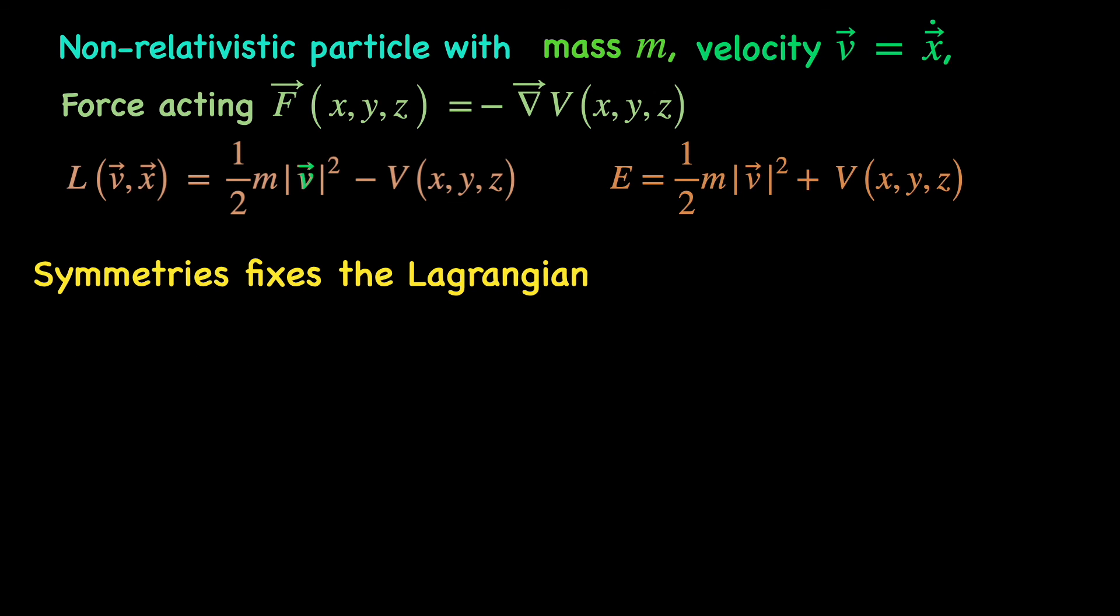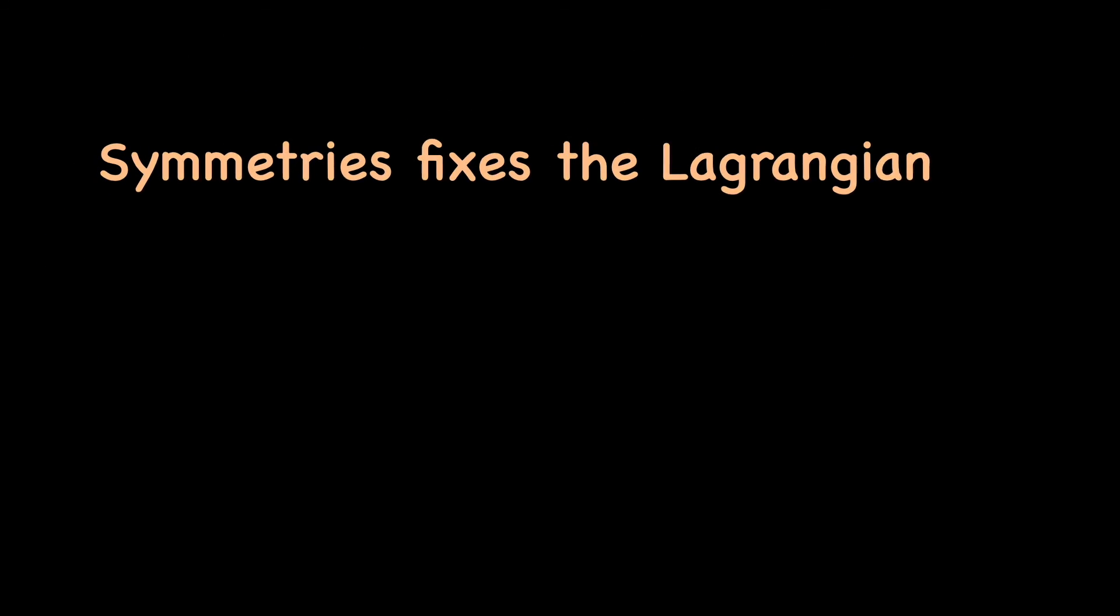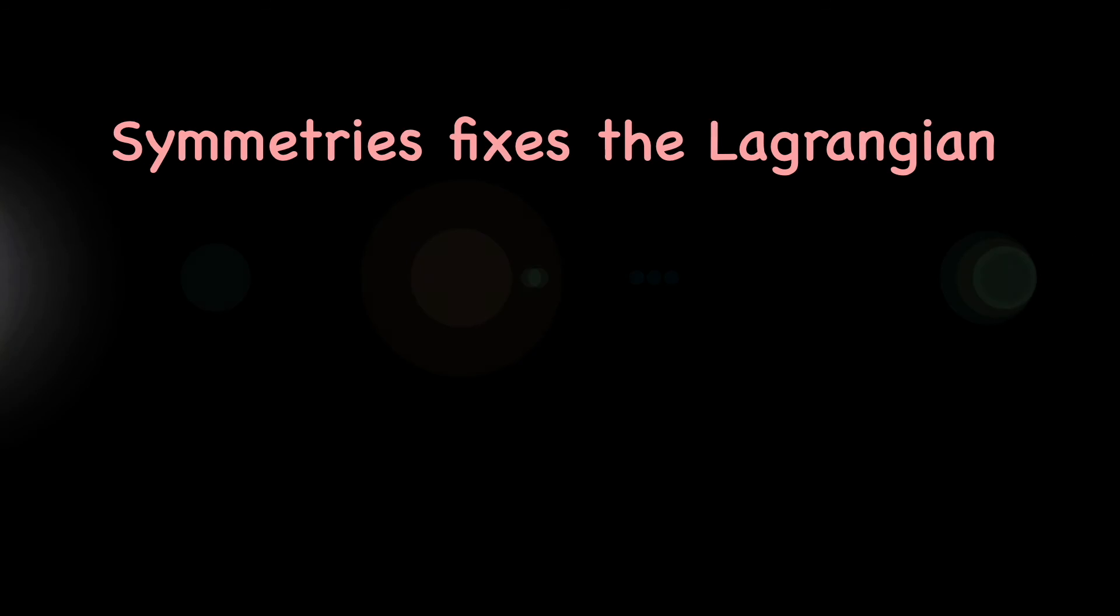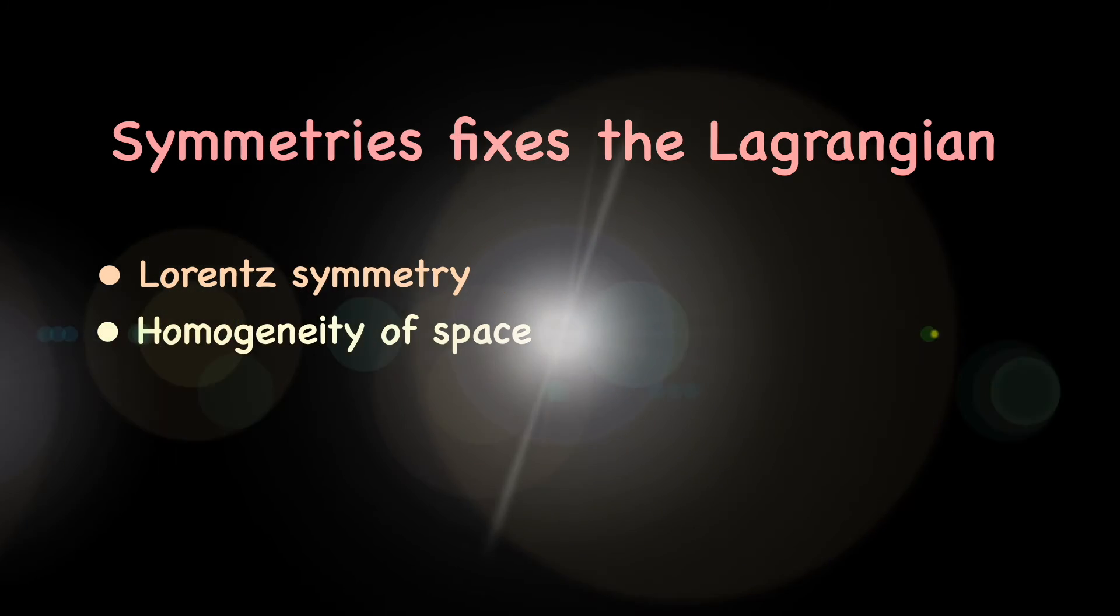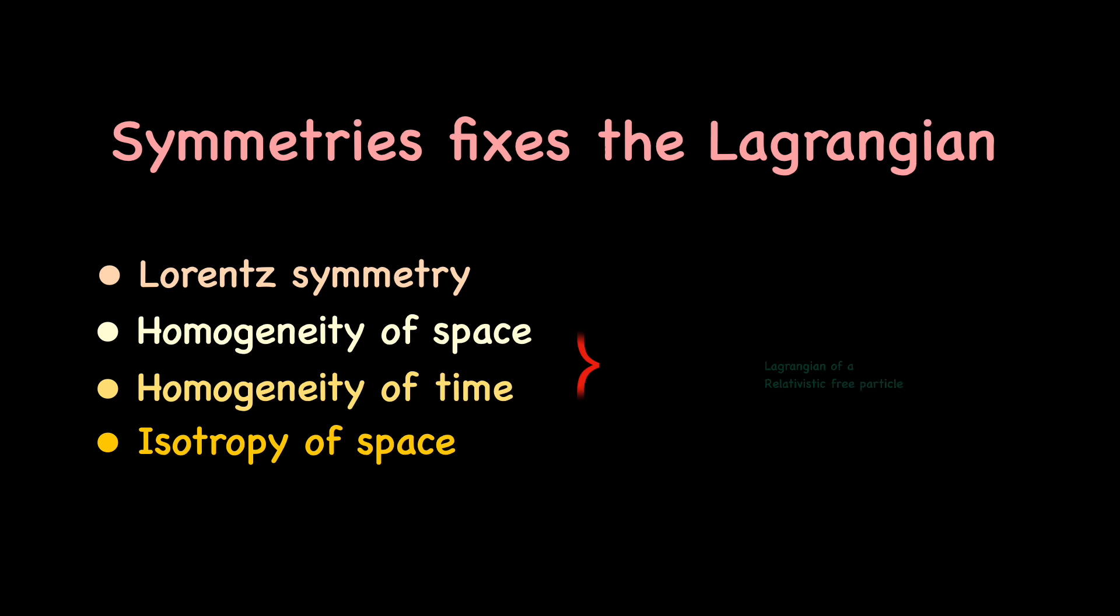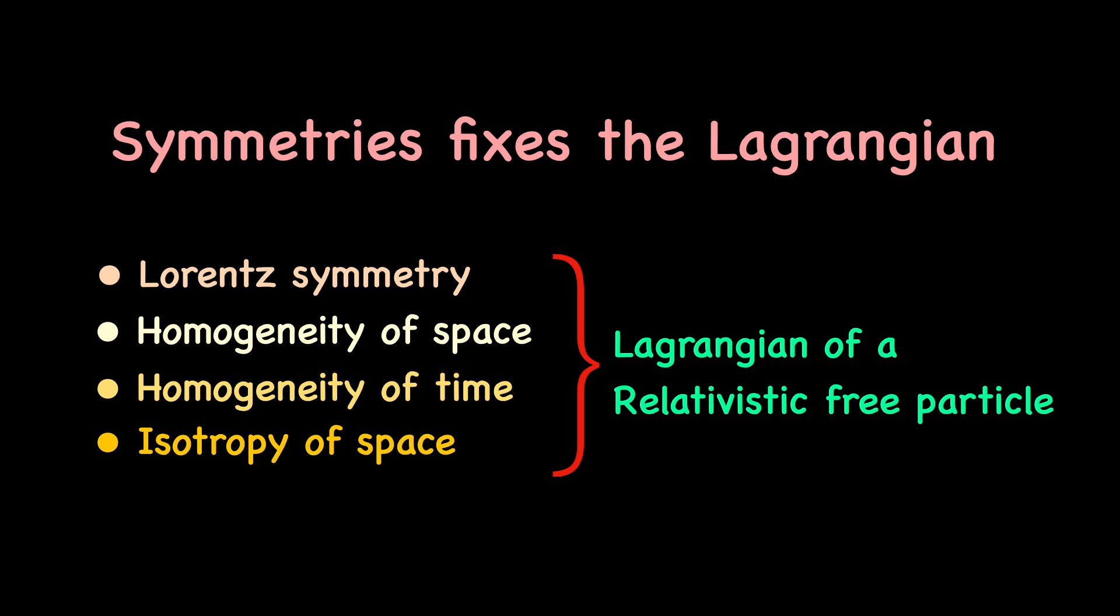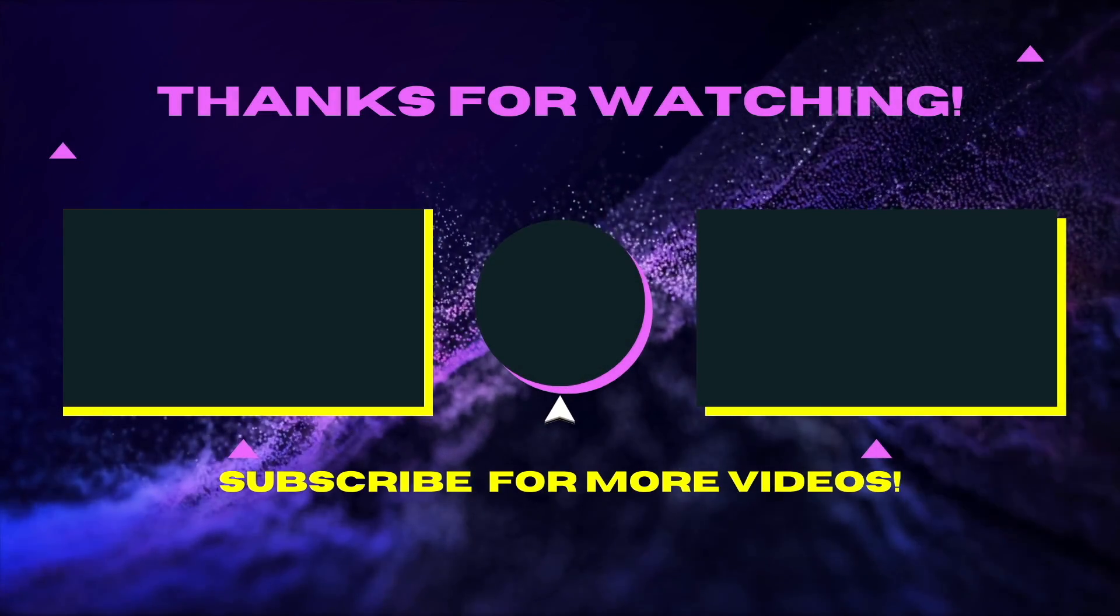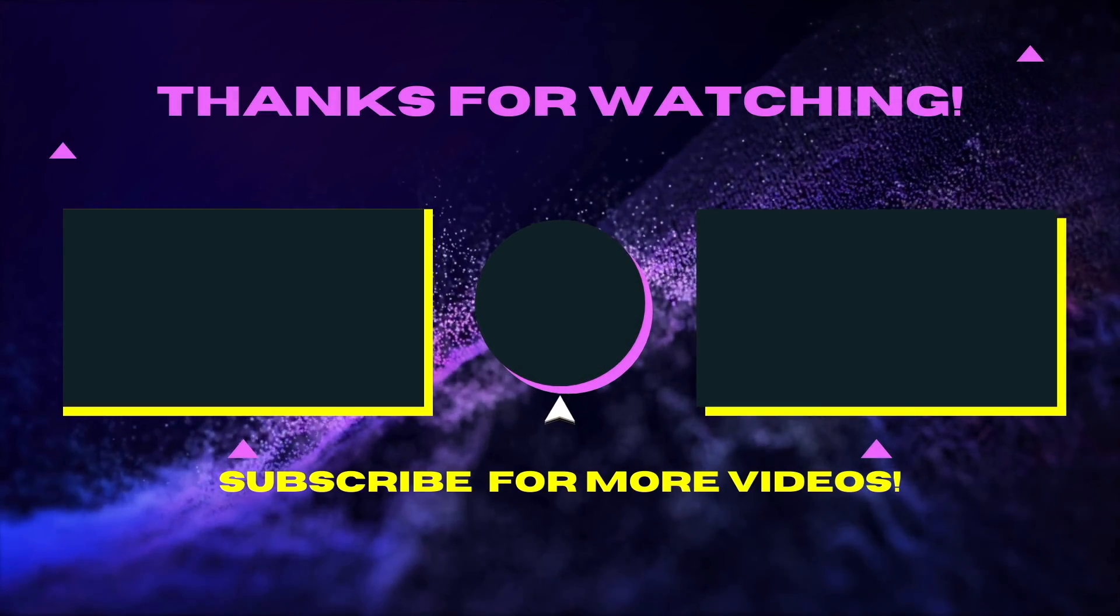What I am trying to impress upon you is symmetries of a Lagrangian are extremely important in fixing its form. In fact, in our next video we shall see how the Lorentz symmetry together with homogeneity of space and time and isotropy of space helps us guess the Lagrangian of a relativistic free particle. So, keep yourself tuned in. Hope you have found this video useful. See you in the next one. Bye-bye.